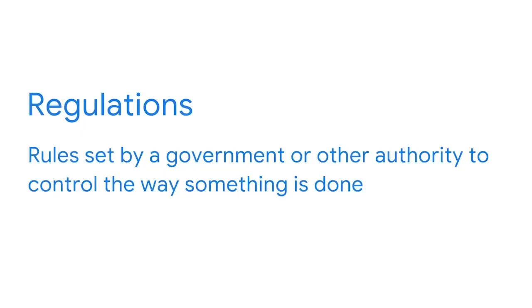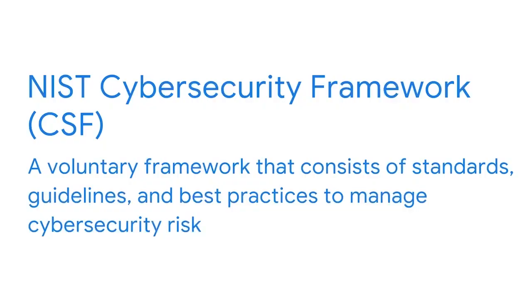Being out of compliance with a regulation can cause long-lasting financial and reputational effects that can seriously impact a business. Regulations are rules set by a government or other authority to control the way something is done. Like policies, regulations exist to protect people and their information, but on a larger scale. Compliance can be a complex process because of the many regulations that exist around the world. For our purpose, we are going to focus on the U.S.-based NIST Cybersecurity Framework. One of the primary roles of NIST is to openly provide companies with a set of frameworks and security standards that reflect key security-related regulations. The NIST Cybersecurity Framework is a voluntary framework that consists of standards, guidelines, and best practices to manage cybersecurity risks.